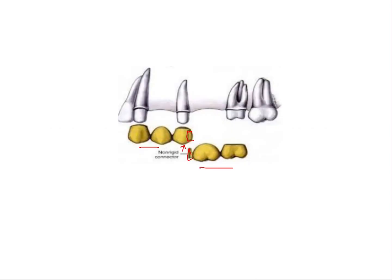Let us look where the key is and where the keyway comes from. This is the keyway. The keyway is present on your pier abutment on the distal aspect of it.